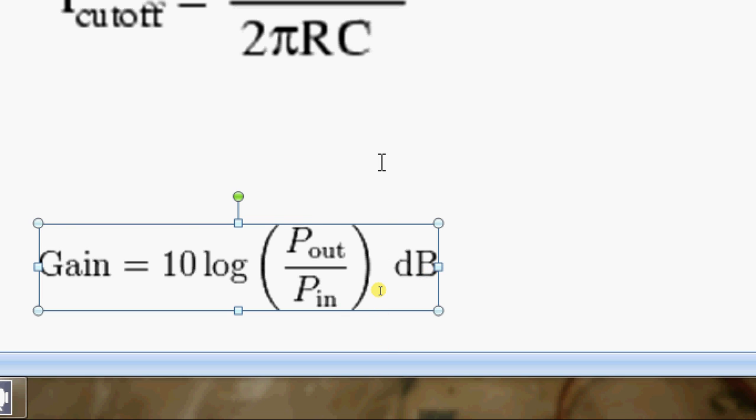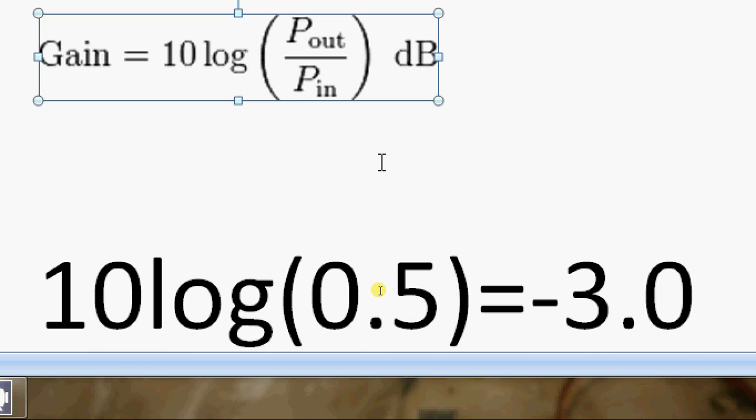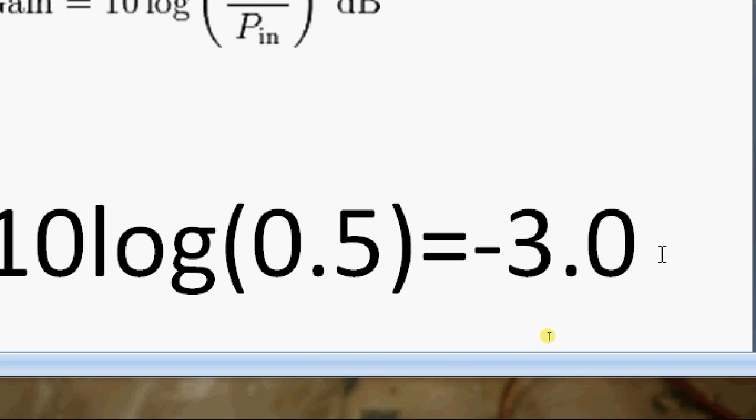And in order to prove that we're going to need another formula and that is gain = 10 log(P_out/P_in). And if you substitute P_out = (1/2)P_in you're going to get gain equals minus 3 decibels and that's exactly what the graph shows us. Now let's go back to the circuit.